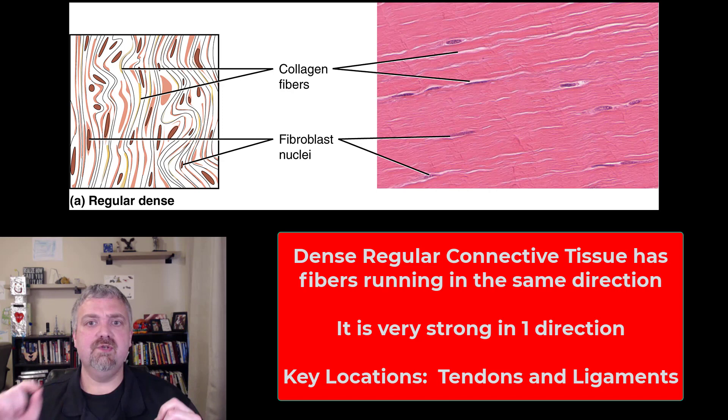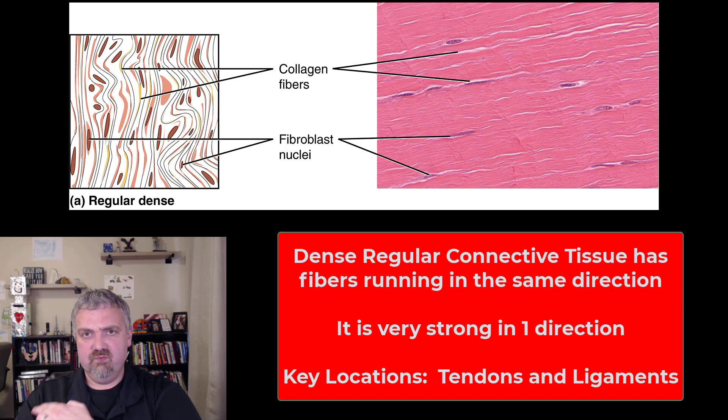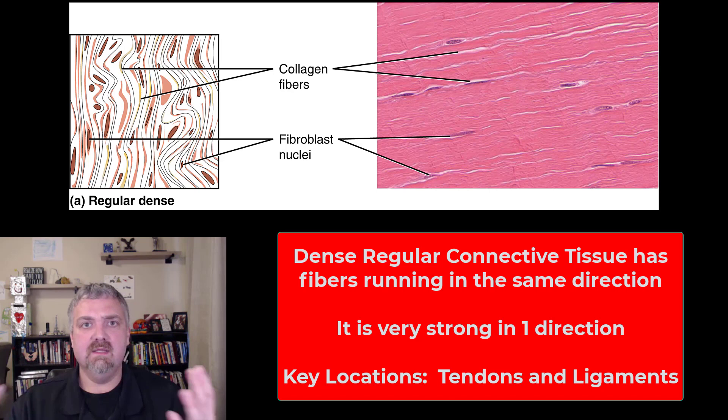The two key examples are going to be ligaments and tendons. A ligament connects one bone to another; a tendon connects a muscle to a bone. For example, the tendon on my biceps is really strong, but only in one direction. If I relax my arm, I can wiggle that tendon back and forth.